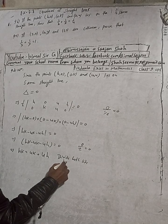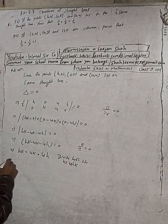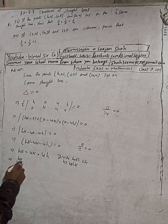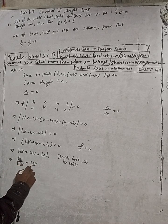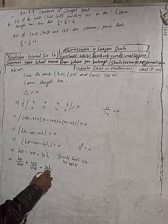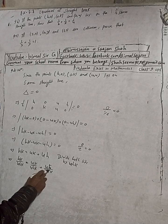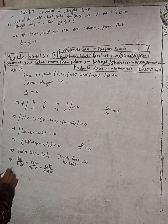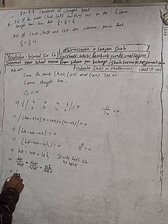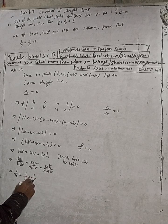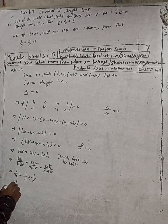Dividing both sides by 4hk: hk divided by 4hk equals 4k over 4hk plus 4h over 4hk. The 4 and k cancel, and the 4 and h cancel, leaving us with 1 by 4 equals 1 by h plus 1 by k. Therefore, 1 by h plus 1 by k equals 1 by 4.